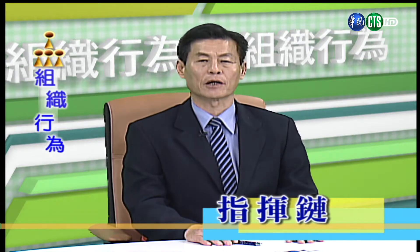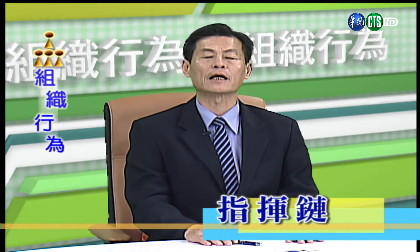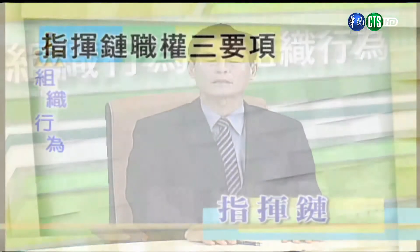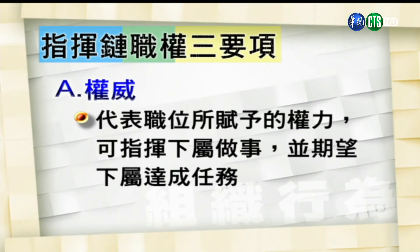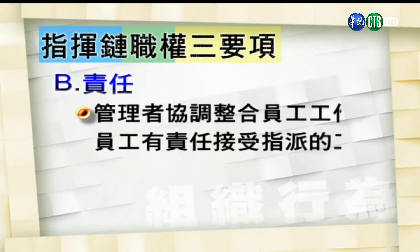第三个组织设计的因素，我们称为指挥链因素。指挥链代表从组织高层到基层的一条联系性的职权关系，它包含三个要项。一、权威，代表职位所赋予的权利，它可以指挥下属做事，并期望下属能够达成任务。二、责任，当管理者在协调与整合员工工作的时候，员工有责任接受指派的工作。